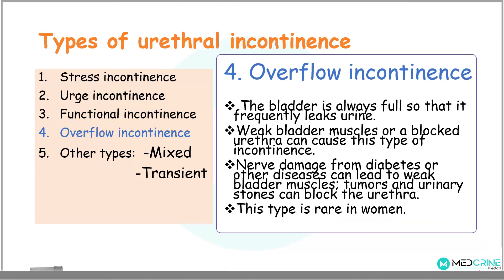Overflow incontinence: in overflow incontinence, the bladder is always full so that it frequently leaks out urine. A weak bladder muscle or a blocked urethra can cause this type of incontinence. Nerve damage as a result of diabetes mellitus or other diseases may weaken these bladder muscles, or tumors and urinary stones may block the urethra. Overflow incontinence is a rare type of incontinence in women.